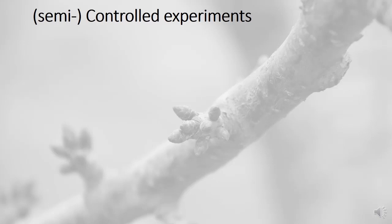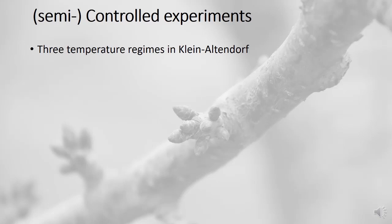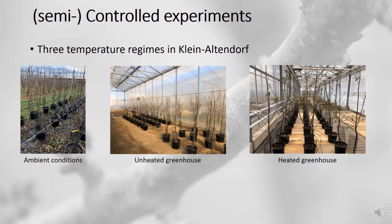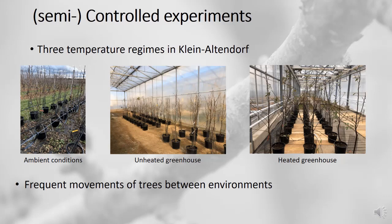We also run semi-controlled experiments. Running controlled experiments with trees is difficult because trees are large and require large growth chambers, and chill treatments require controlled cool conditions that are particularly hard to implement. We made use of three temperature regimes at Klein Altendorf: ambient outdoor orchard conditions, an unheated greenhouse, and a heated greenhouse. None are precisely temperature controlled, but we created additional variation by frequently moving groups of trees between these environments.